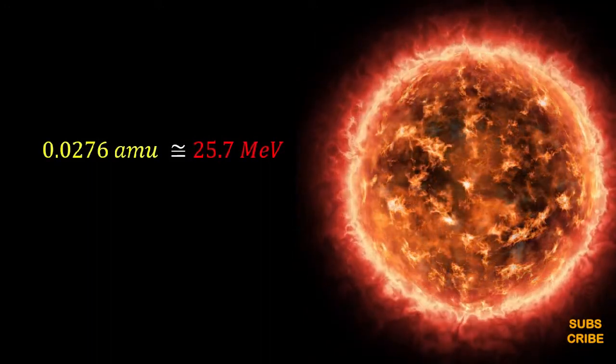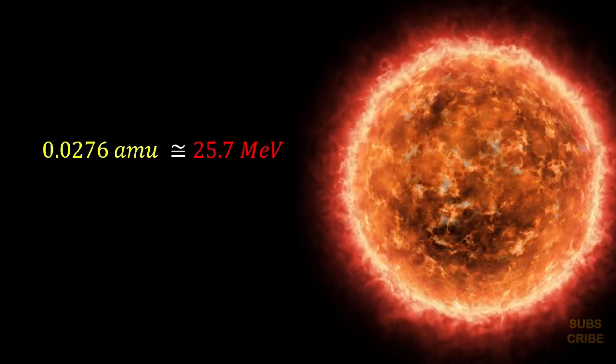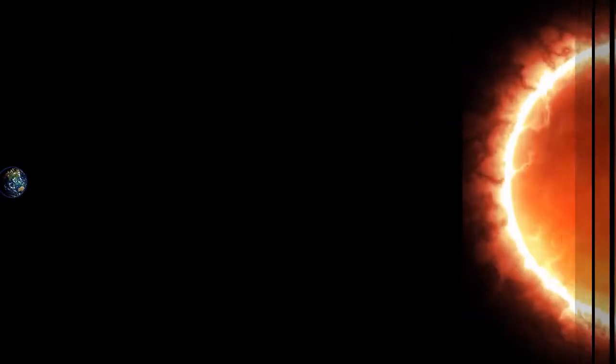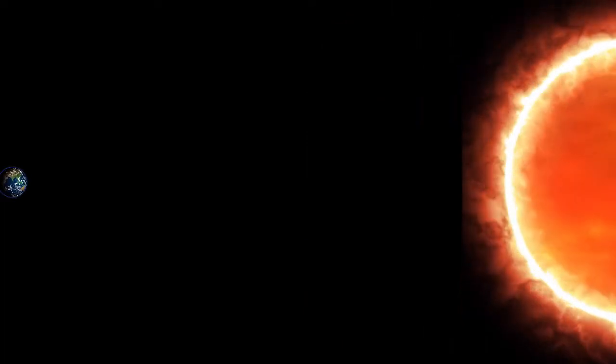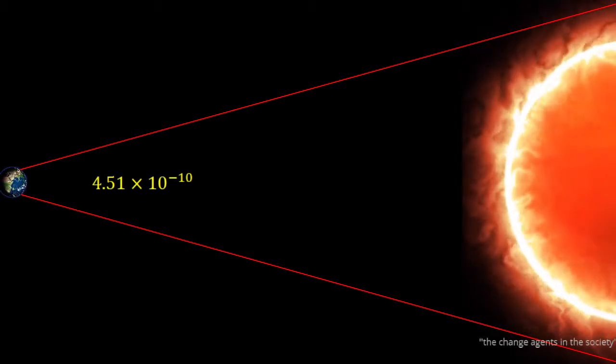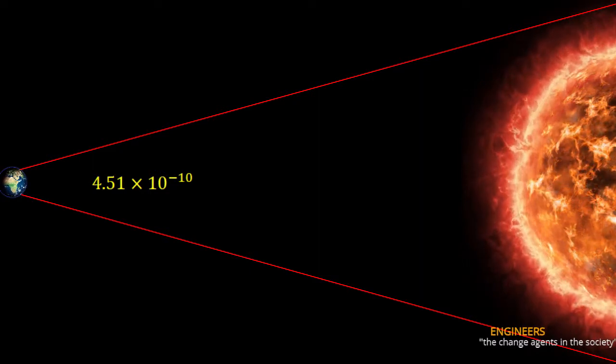Here the energy release of 25.7 million electron volts by forming one helium appears to be very small, but the fusion reactions are taking place in plenty per second, so the energy release is enormous. The fraction of energy intercepted by the Earth is only 4.5 times 10 raised power minus 10. This energy comes to the earth in the form of radiations.